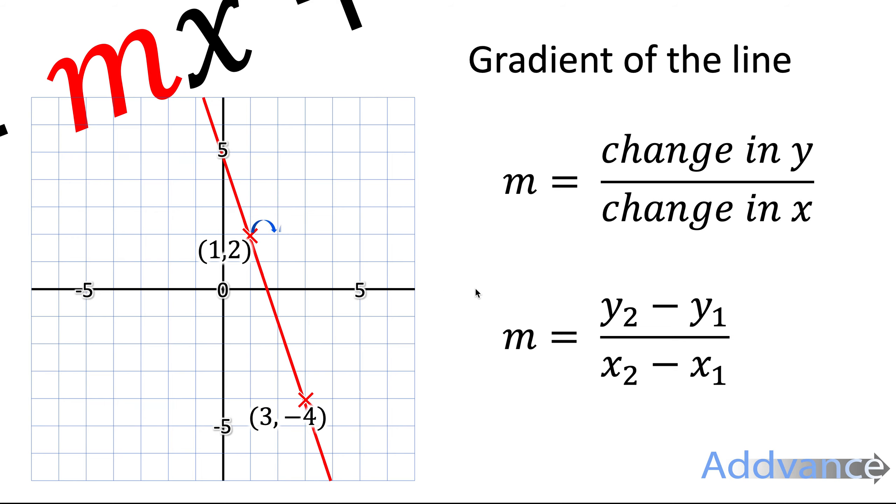So here, this line goes 2 across, and that is 6 down. The change in x is 2, and the change in y is how far it goes up or down, is minus 6, because it's going downwards.